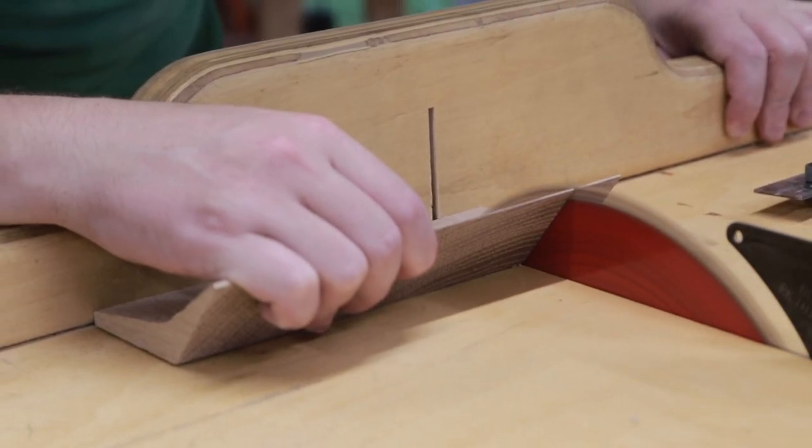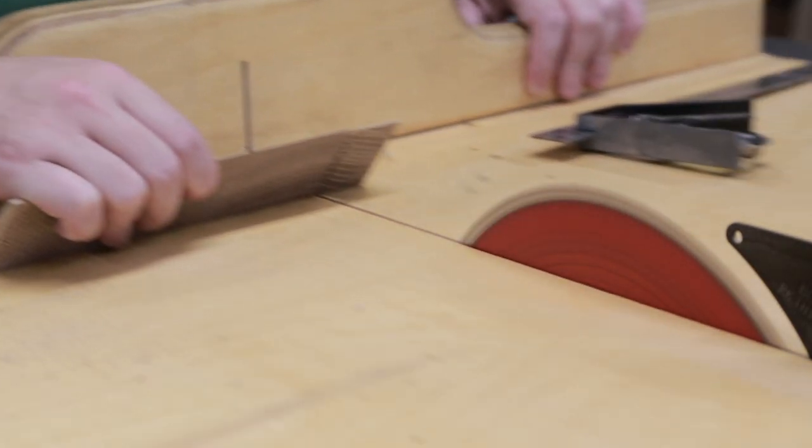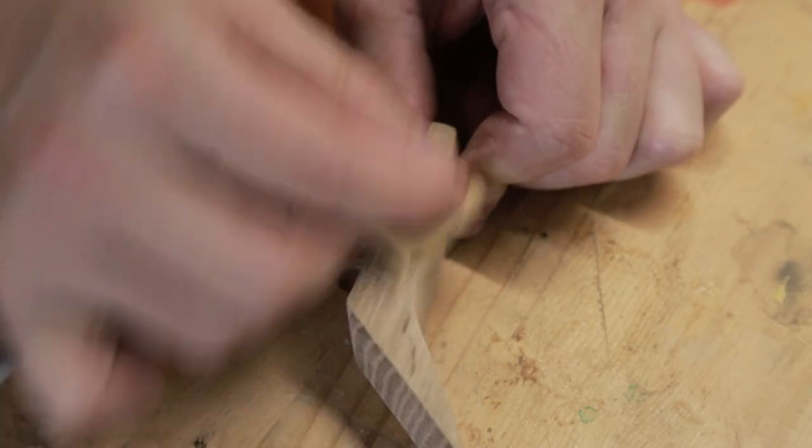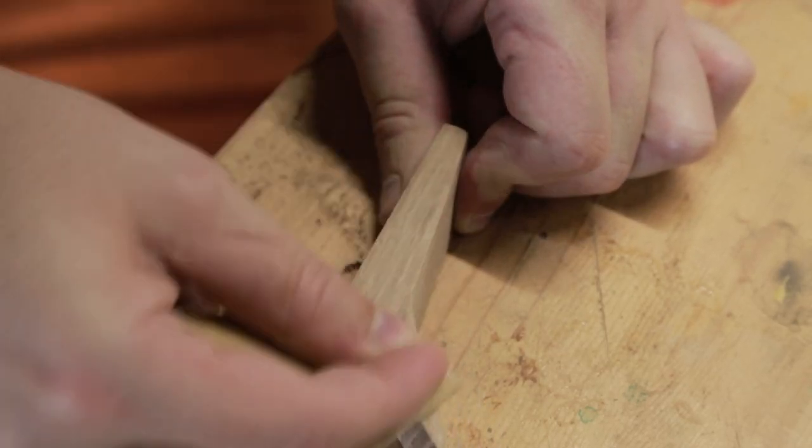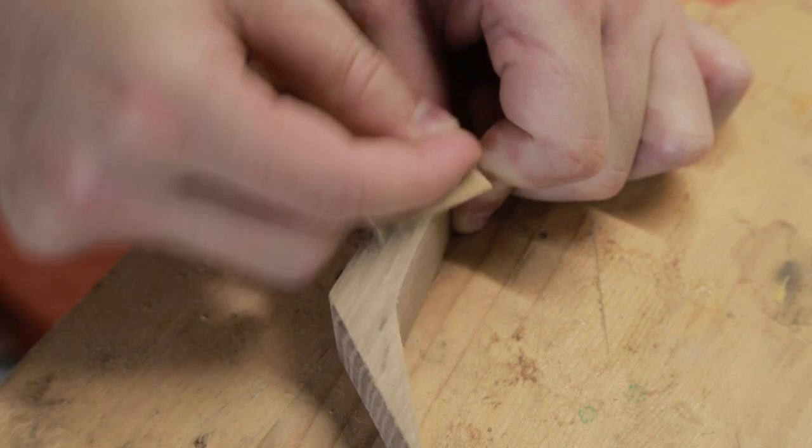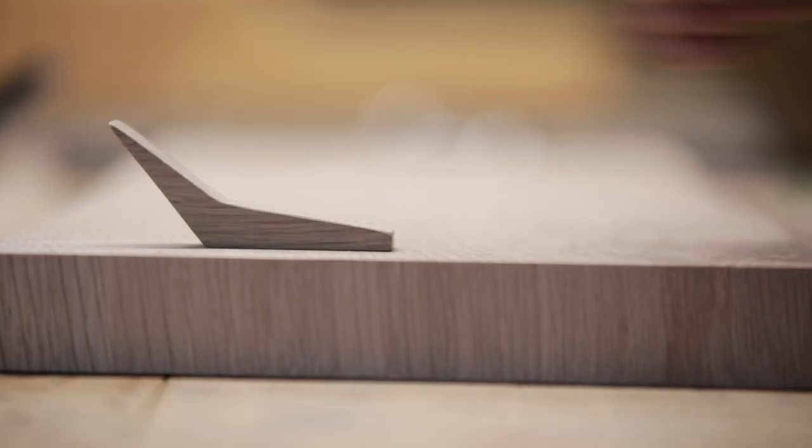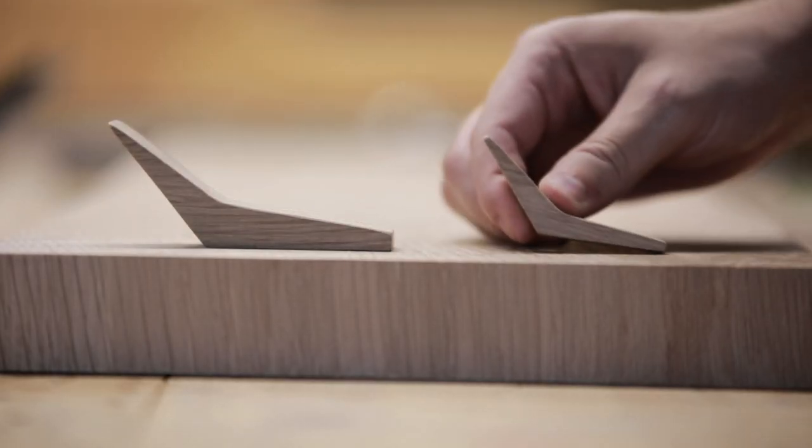Once I got the angles cut, I can cut them apart at one inch each. With a little bit of sanding, these are just about done. I also made smaller hooks to hang your keys.